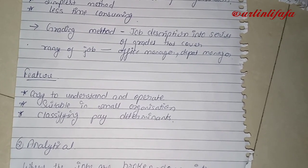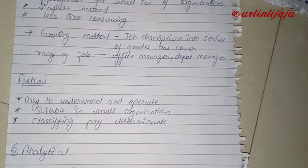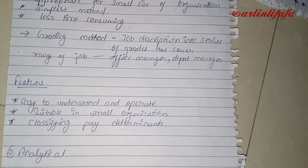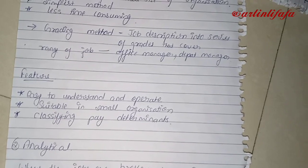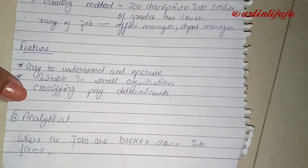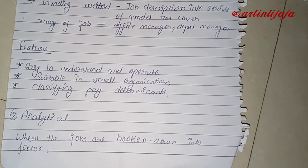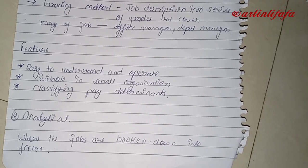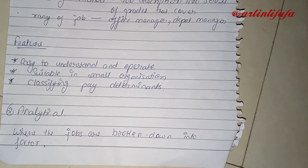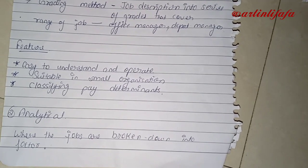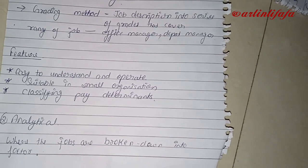The grading method classifies job descriptions into a series of grades that cover the rank of jobs, such as office manager, departmental manager, or sales manager — we can grade different positions. Its features are: easy to understand and operate, suitable for small organizations, and it helps in classifying pay determinants. We can easily determine the pay structure because we have already graded jobs and assigned salary levels accordingly.